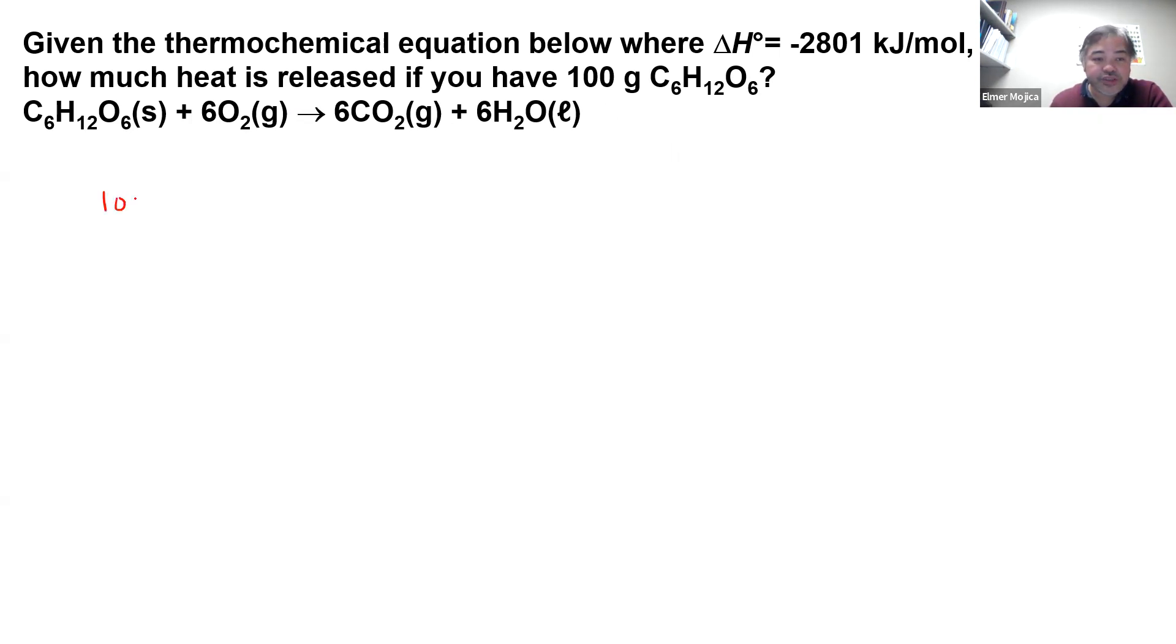So let's solve this one. We have 100 grams C₆H₁₂O₆, and then we get the corresponding moles of that. In every one mole of C₆H₁₂O₆, you have 180 grams C₆H₁₂O₆. Where do we get the 180? We add all the elements in the sugar.